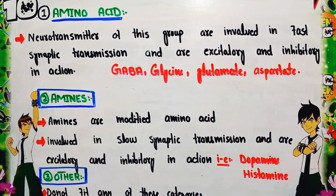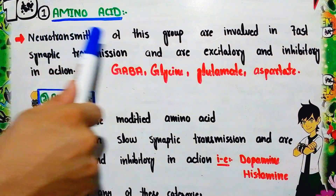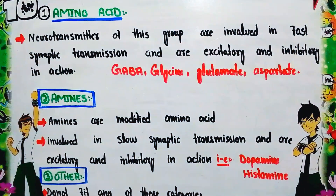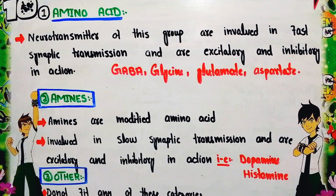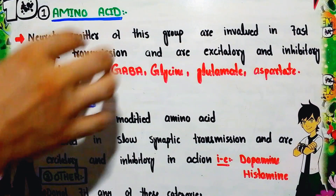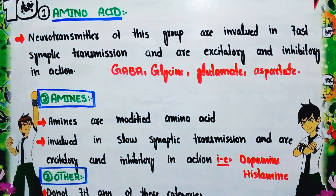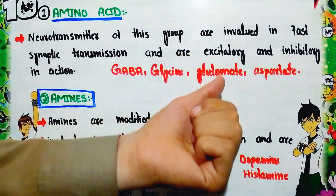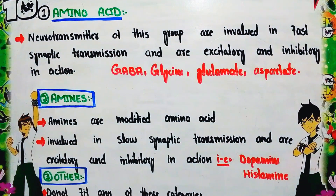Amino acid neurotransmitters are made from amino acids and are involved in fast synaptic transmission. They can be excitatory or inhibitory in action at the postsynaptic membrane. Examples of amino acid neurotransmitters include GABA (gamma-aminobutyric acid), glycine, glutamate, and aspartate.